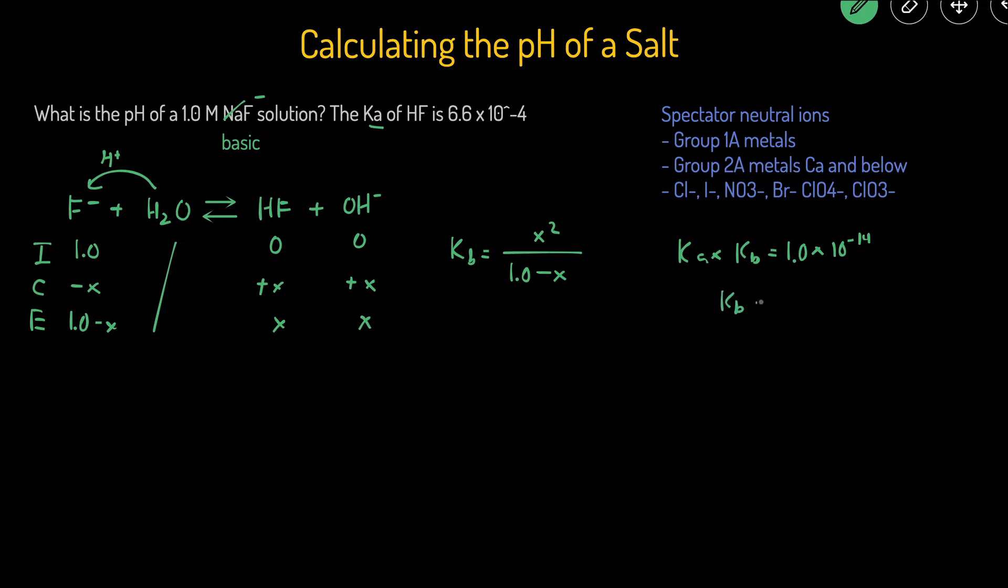Then KB is just going to equal 1.0 times 10 to the negative 14 divided by the KA, which is 6.6 times 10 to the negative 4. We're given that value. That comes out to be 1.51 times 10 to the negative 11. So that's our KB.